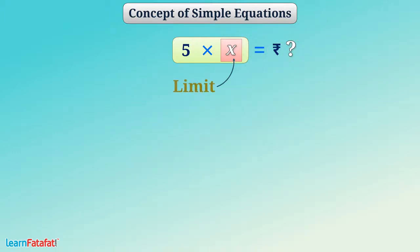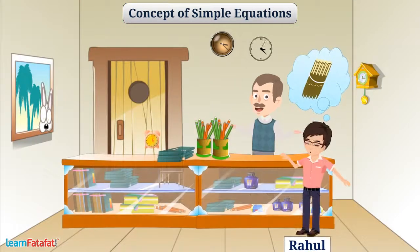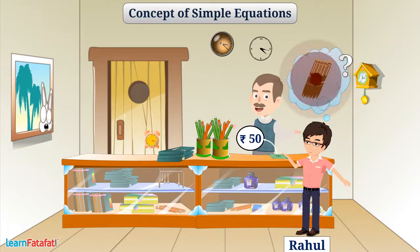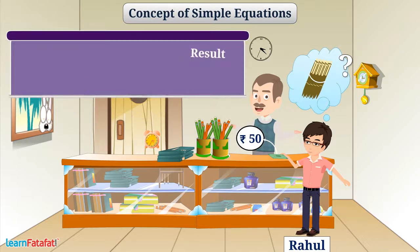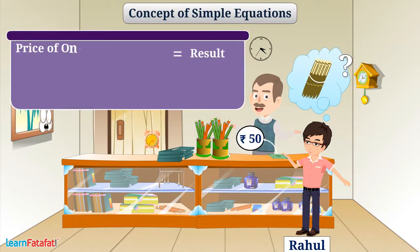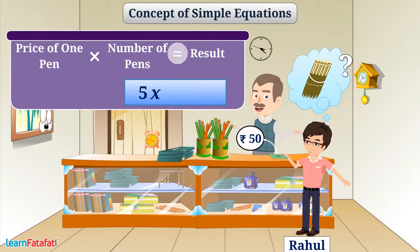Often we set a limit on the value of the variable. For example, say Rahul has Rs. 50 with him. How many pens can he buy if he uses all the money he has? That means the result of the price of one pen multiplied by the number of pens — that is, 5x — should be equal to the money Rahul has. We can write it as: 5x is equal to 50.